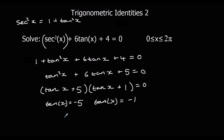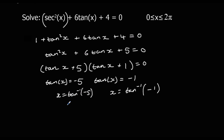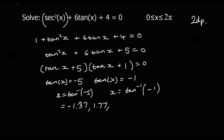We're going to do arctan — shift tan — to get x by itself. So arctan(−5) and arctan(−1). We're in radians, so make sure the calculator is in radians. Shift tan of −5 gives minus 1.37. We need answers between 0 and 2π, so we add π to find the next answer: 1.77. And adding another π: 4.91.